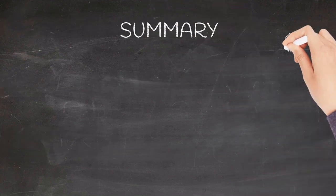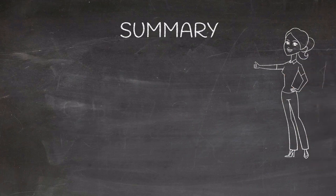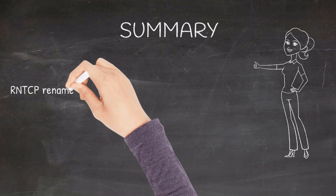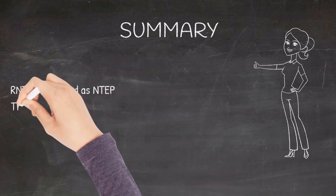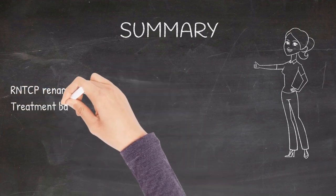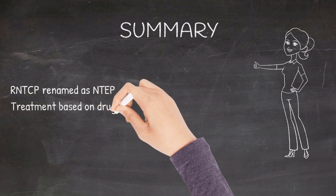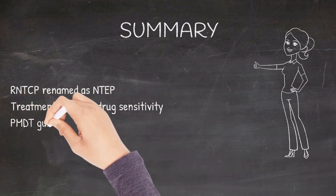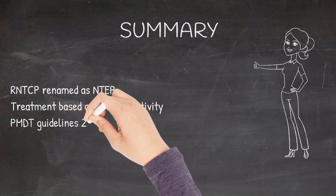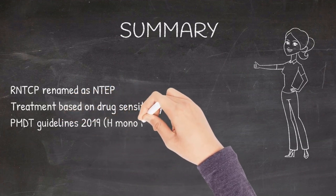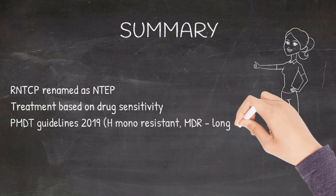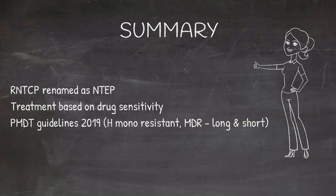To summarize, RNTCP is now relabeled as National Tuberculosis Elimination Program. Treatment is now based on drug sensitivity pattern. Based on the PMDT 2019 guidelines, drug-resistant TB is now managed as H-monoresistant TB, shorter MDR-TB regimen or all-oral longer MDR-TB regimen. Thank you.